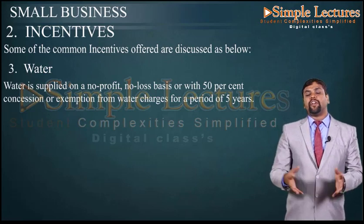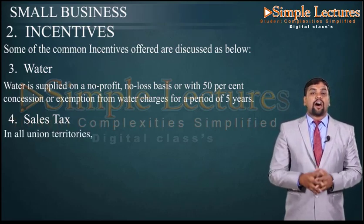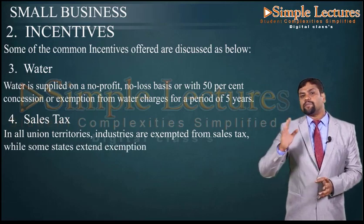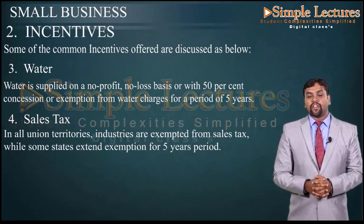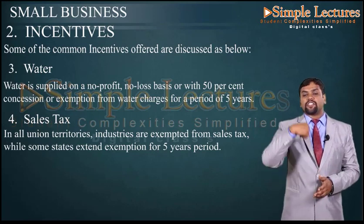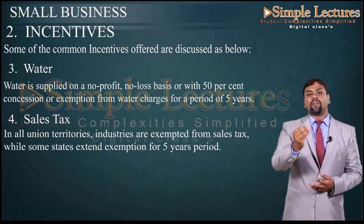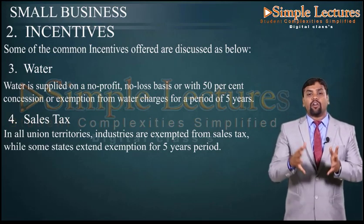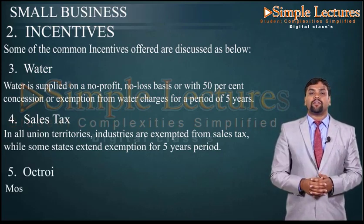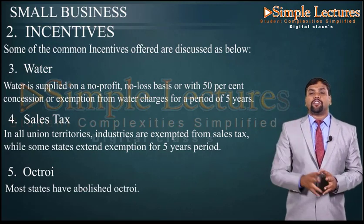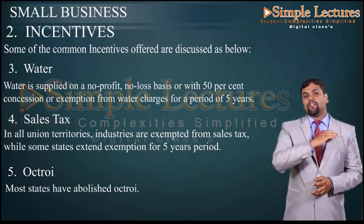The next incentive is on sales tax. In all union territories, industries are exempted from sales tax, while some states extend exemption for a 5-year period. Additionally, most states have abolished octroi on small businesses, meaning no local taxes need to be paid to the state government — a beautiful incentive for small businesses in India.